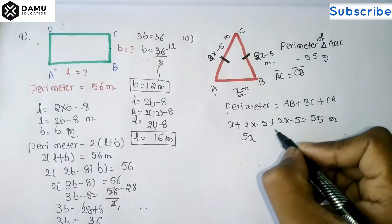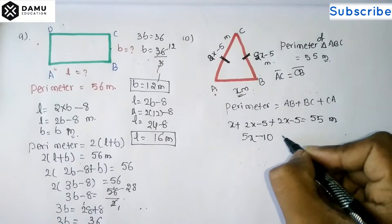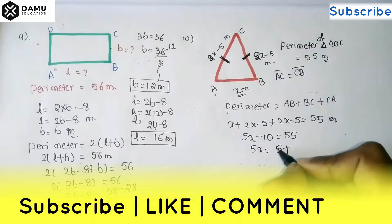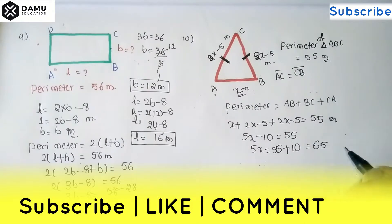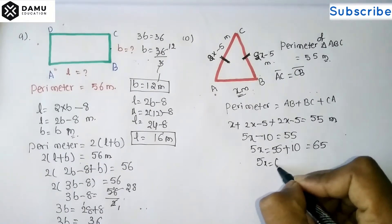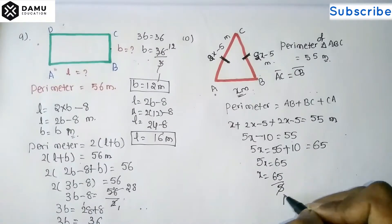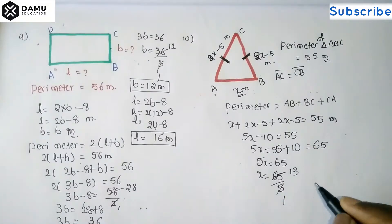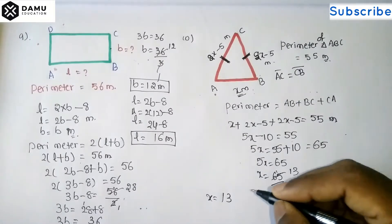So 5x = 55 + 10 = 65. Then x = 65 divided by 5, which gives x = 13 meters.